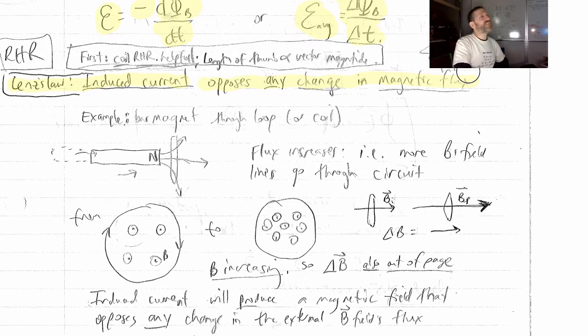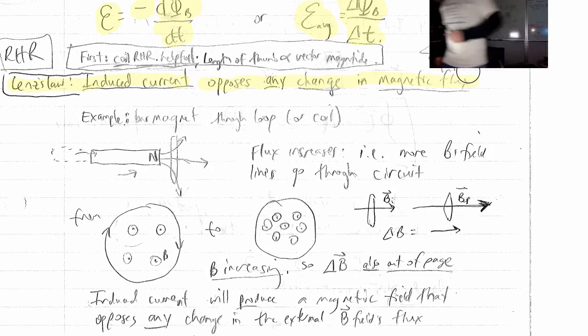Induced current will oppose any change in magnetic flux. Current is not always induced. What is one reason that I could take a magnet and move it back and forth and there would be no current induced? Let me go get a magnet so I can do this. There's no conductor. Yeah, there's no conductor. I'm not going to get any current.